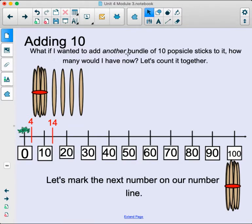If I wanted to add another bundle of 10 popsicle sticks to it, how many would I have now? So here I'm showing 14. We mark that on our number line. So we started out with 4, remember? And we added one bundle, which would be 10. So whenever you see a bundle like this, we know that there's 10 popsicle sticks in there.